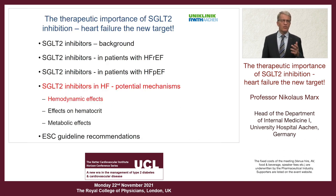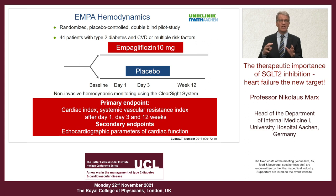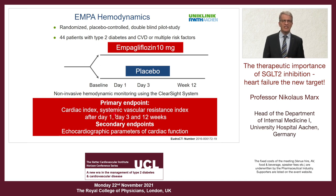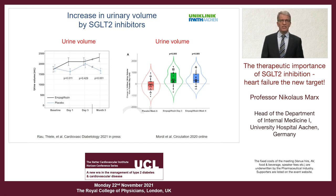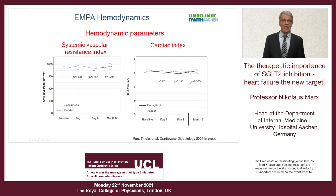Regarding potential mechanisms, I'll focus on three aspects: hemodynamic effects, effects on hematocrit, and metabolic effects. In a small study we conducted in patients with type 2 diabetes at high cardiovascular risk randomized to empagliflozin or placebo, we hypothesized that the early effect on heart failure hospitalization was due to hemodynamic changes. We assessed cardiac index and systemic vascular resistance noninvasively at day 1, day 3, and three months. Already after one day, and consistently after three months, empagliflozin led to an increase in urine volume of about 500–700 ml.